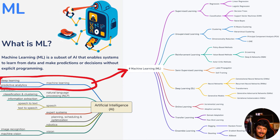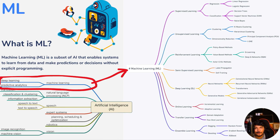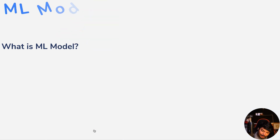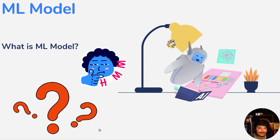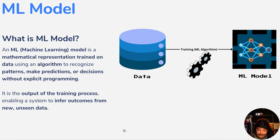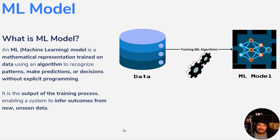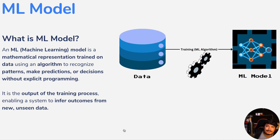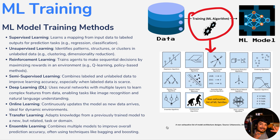You should be wondering how machine learning works. In order to understand that, you have to understand about the machine learning model first. A machine learning model is a mathematical representation that is trained on data using algorithms to recognize patterns, make predictions or decisions, without explicit programming. This ML model gets generated after doing ML training.